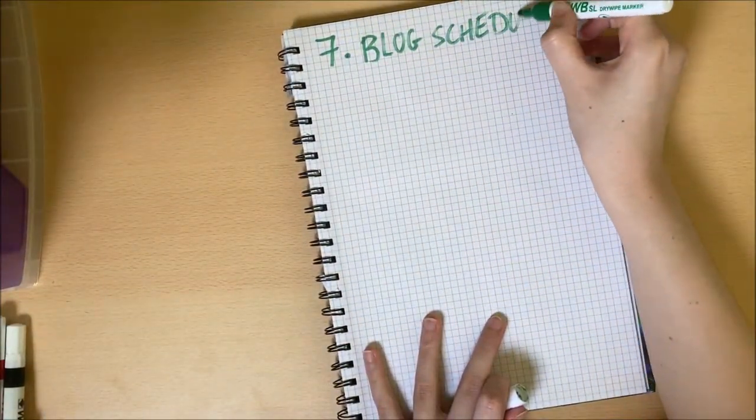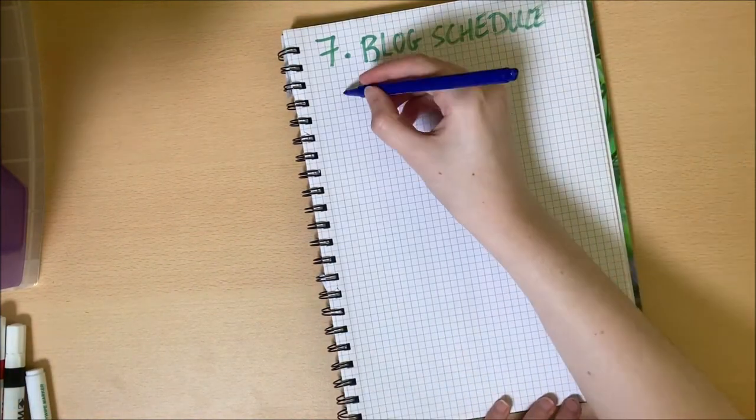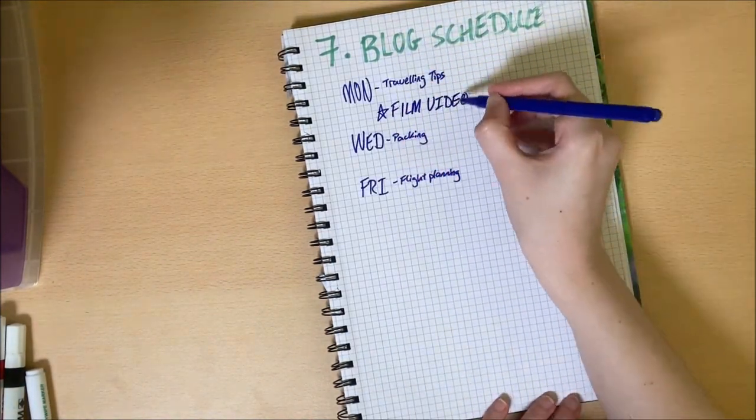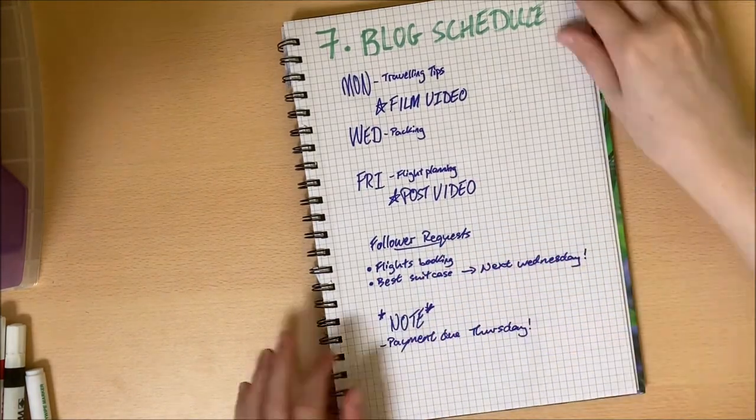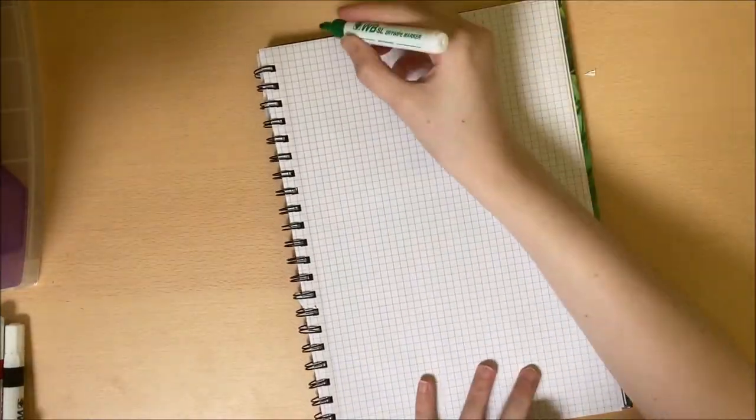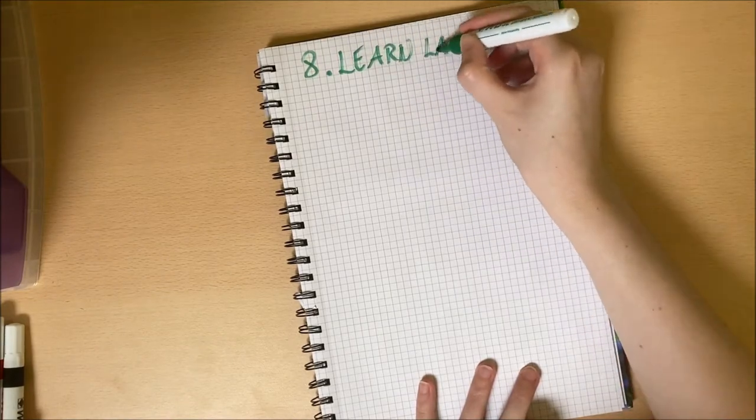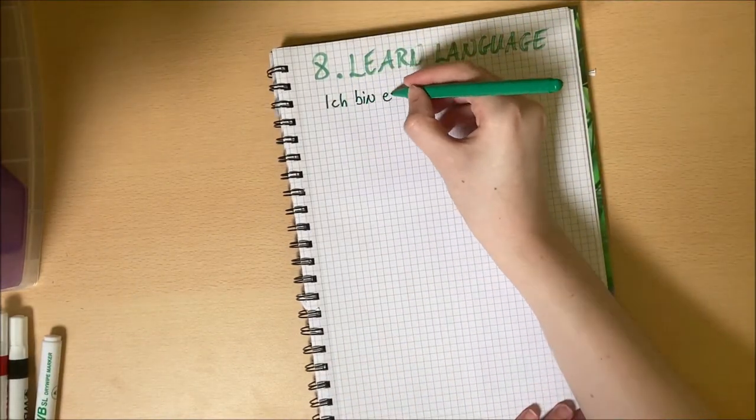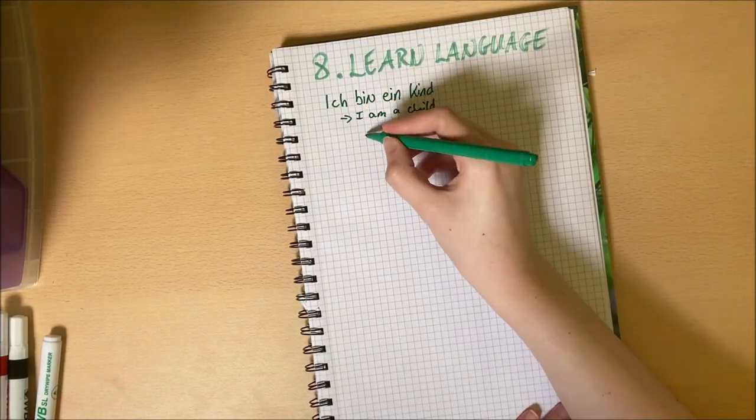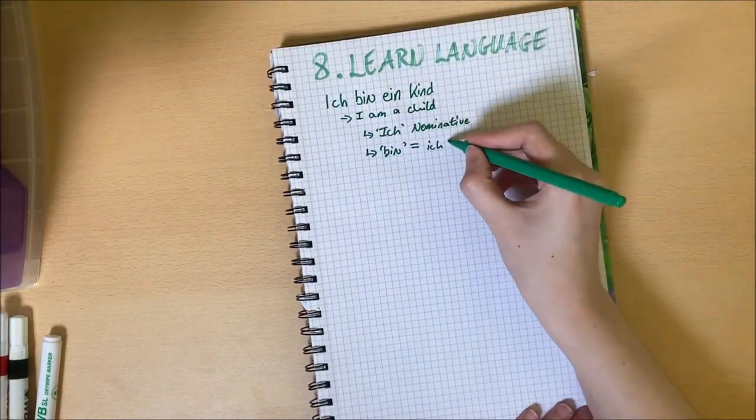Idea number seven, use the pages to schedule your blog. This could be a website, an online blog such as Tumblr or even a YouTube channel. Idea number eight is to learn a new language. It's really easy to just write out different sentences or words and you can break them down into the different parts and put the grammar points next to them.